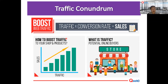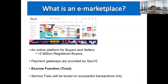Q10 is a marketplace where you can sell anything — from food to gadgets and everything in between. We have more than 3 million registered buyers, and we are the first and oldest marketplace in Singapore, coming up to nine years. Payment gateways are provided by Q10, and we have an escrow function that holds payment in trust to protect both buyers and sellers. Service fees are levied based on success. Payment options for shoppers include 7-Eleven, GrabPay, and others — so even without a credit card, shoppers have choices.